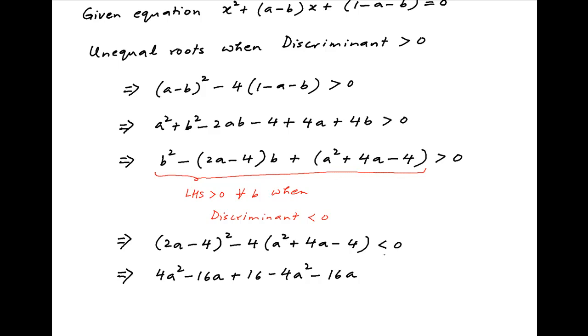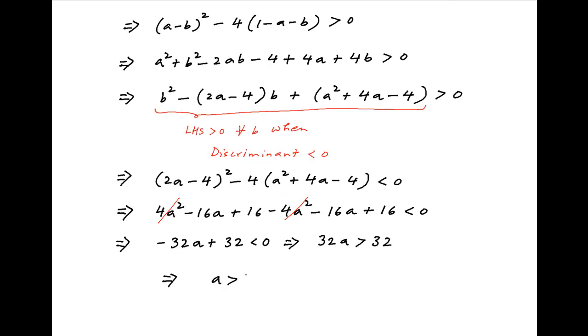4a² cancels on the left-hand side and this inequality simplifies to -32a + 32 < 0, which implies that 32a > 32, or a > 1, which is the required answer.